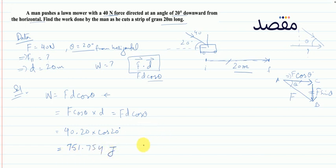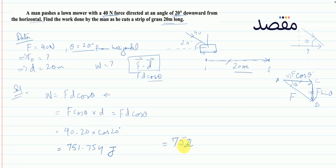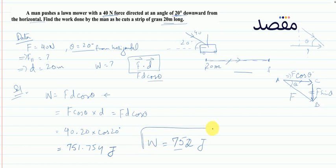Work done joules में measure होता है। दिए गए values two significant figures में हैं, तो three significant figures में round off करते हैं। Final answer: 752 joules of work done has been done by that lawnmower.